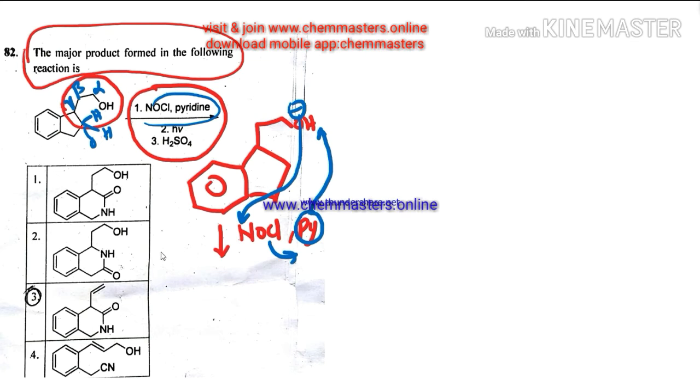In total, the loss of HCl takes place and we can get this structure. Just stay with me, and here ONO. In the next step we have given with photochemical conditions and H2SO4.